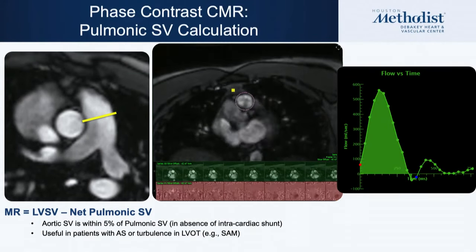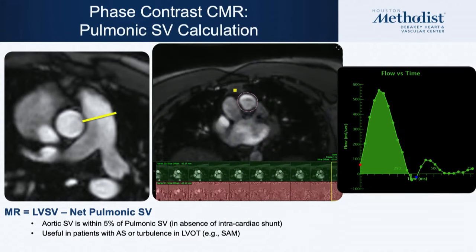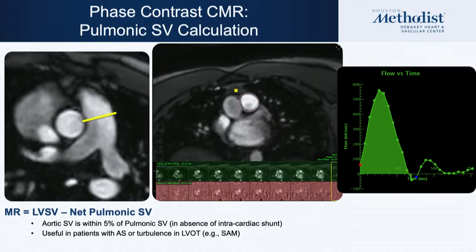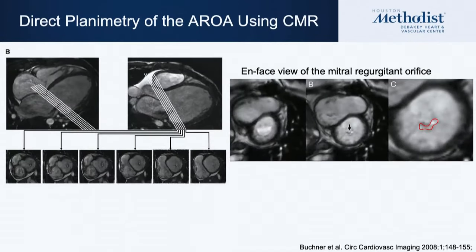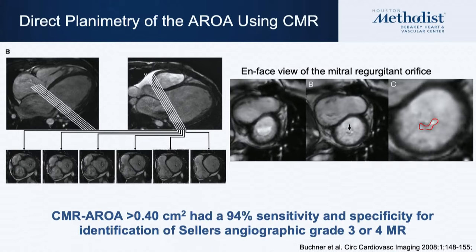Another method used in some labs is direct planimetry of the anatomic regurgitant orifice area — not the effective regurgitant orifice area, which is purely an echo calculation. The anatomic orifice area is typically larger than EROA, and one study found that an anatomic ROA >0.4 cm² had high sensitivity and specificity compared to angiographic grade 3–4 MR. However, this is a secondary method and not the primary approach.